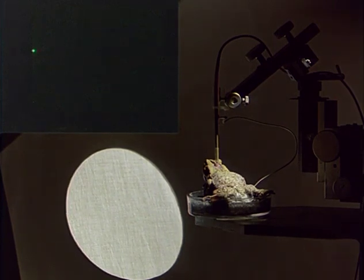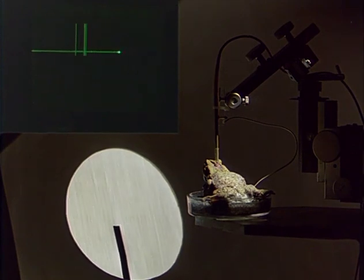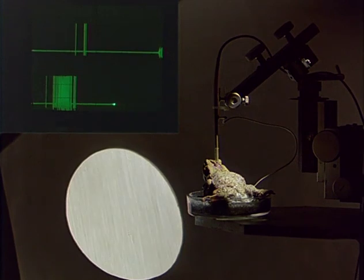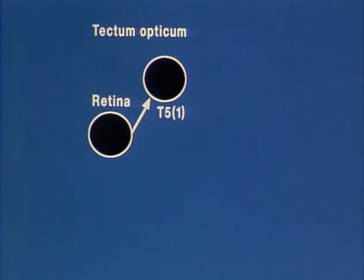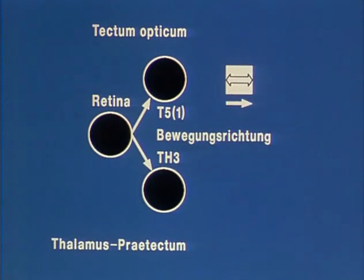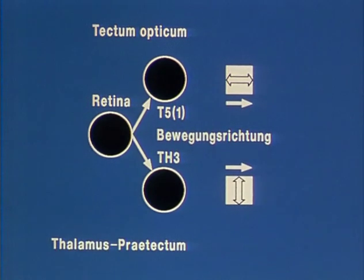Many types of neurons have been investigated. What function may they fulfil for the release behaviour? A working hypothesis suggests that visual information pre-filtered by retinal neurons is transmitted via the optic nerve to neurons of the midbrain and simultaneously to neurons of the diencephalon. Certain neuronal systems T5-1 in the optic tectum evaluate from the area of a moving object preferably its extension parallel to the direction of movement. Conversely, other Th3 in the thalamus evaluate from the area of the object predominantly its extension perpendicular to the direction of movement.